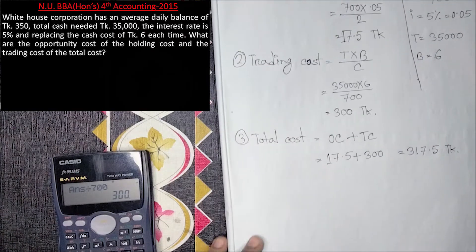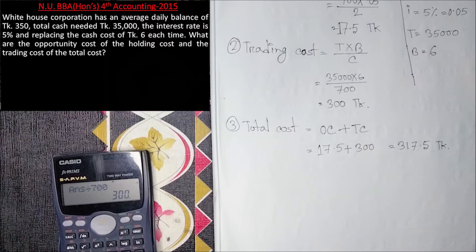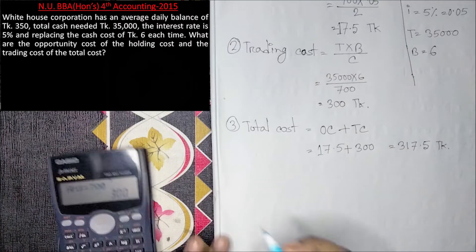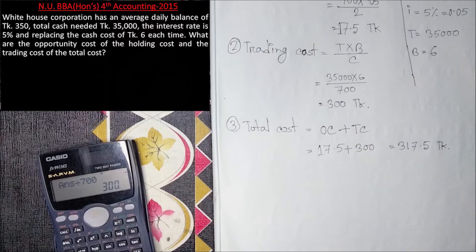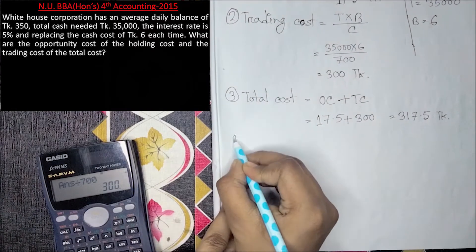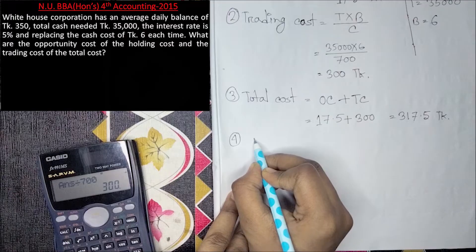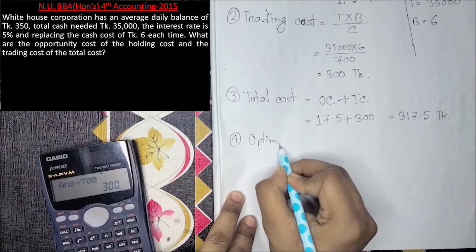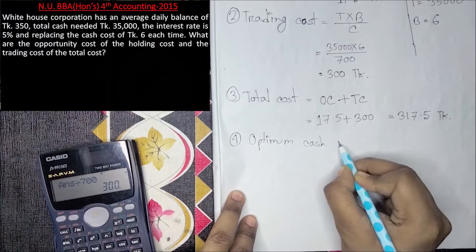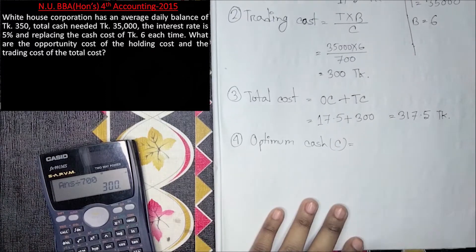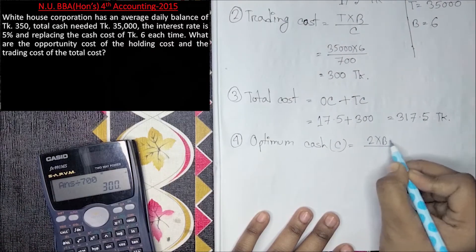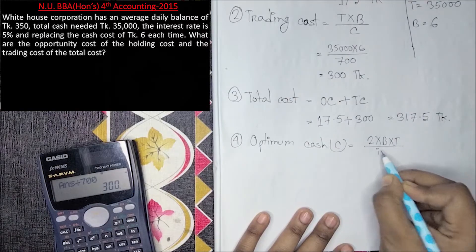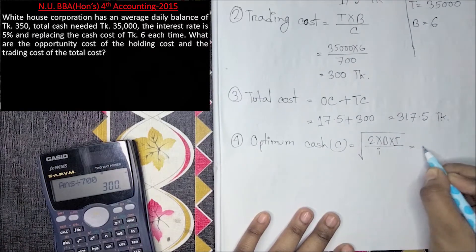The total cost leads us to find the optimum cash balance, which we call C star. The optimum cash is the target cash balance. The formula for the target cash balance is: C star equals the square root of 2 times b times T, divided by i.